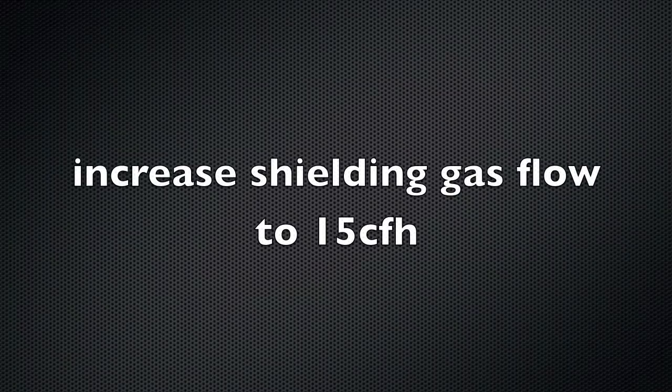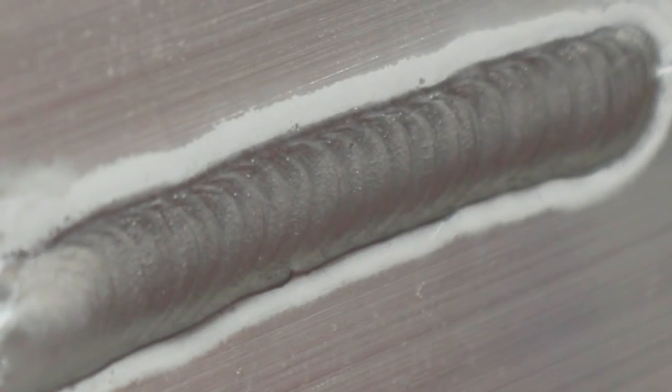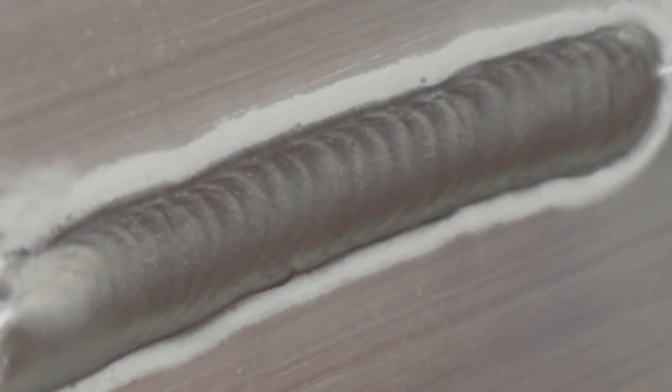So I increased it only five, just to 15 CFH, and now you can see during this arc shot here that I've got a good band of cleaning action on the bottom as well as the top, as well as in front of the puddle. That's much better. It's welding much cleaner, everything's going much better. You see the band of cathodic etching on the top as well as the bottom. That's what you need.